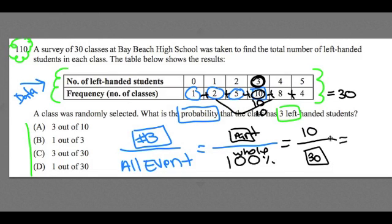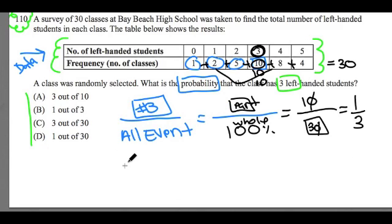Now ten out of thirty could be reduced to one over three, or we could think of this as one out of three classes have three left-handed students. That would be the probability.